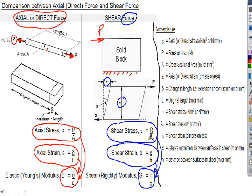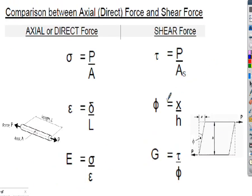If you understood the direct stress work, the mathematics and rearrangements here are very similar. I'll put the nomenclature on the right-hand side for all the symbols, as I use symbols a lot to shorten calculations. This shows the analogous nature of direct and axial forces, stresses, and strains with shear forces, stresses, and strains — they are very analogous to each other.